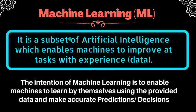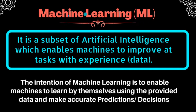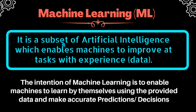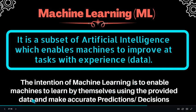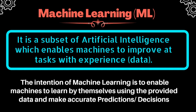ML is a subset of AI, meaning whatever is ML is also AI. Machine learning not only enables machines to mimic human intelligence but enables machines to improve at a task with experience. The intention of machine learning is to enable machines to learn by themselves using provided data and make accurate predictions and decisions. When working with AI through fixed algorithms, further improvement becomes complicated - that's why machine learning emerged, enabling machines to learn by themselves through data training.